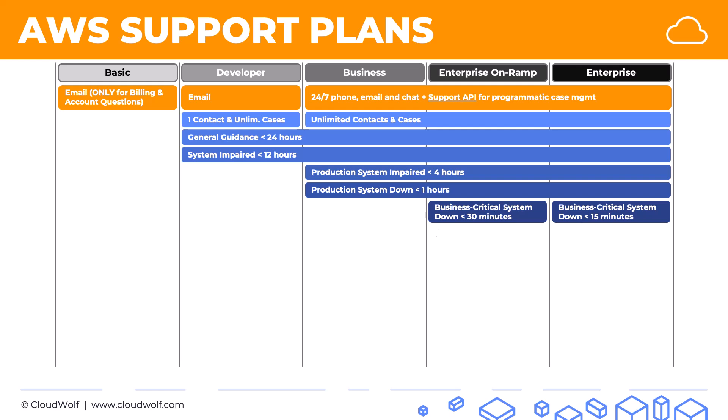Next, we have concierge services — basically AWS helps you with billing and account analysis to cut down your costs. These are available in enterprise on ramp and enterprise.